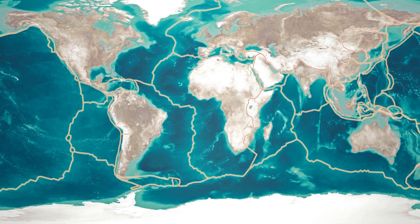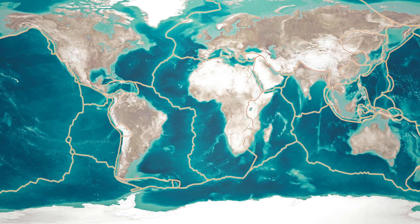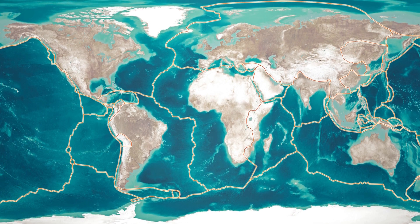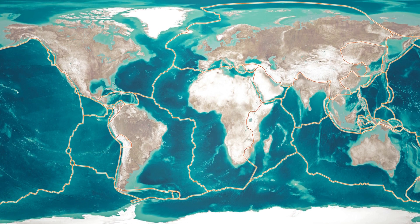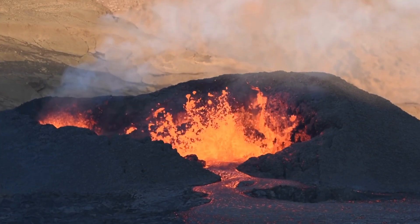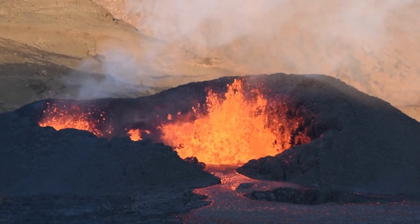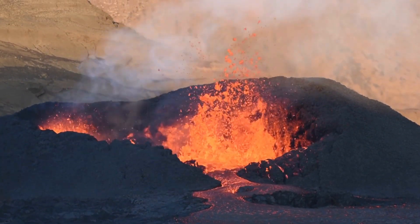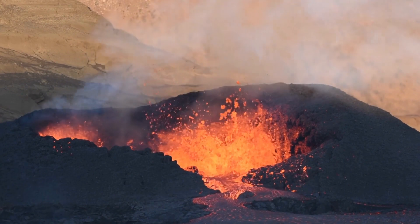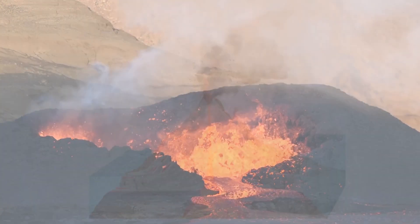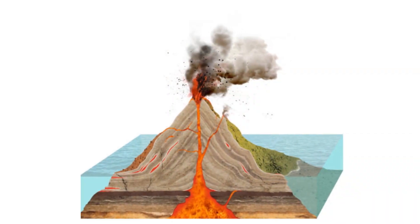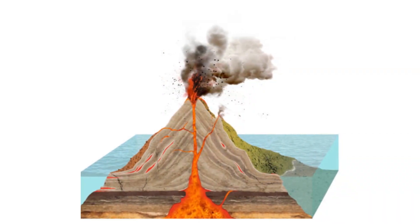Plate tectonics gives rise to several fascinating phenomena that shape our planet. Volcanoes are born at convergent and divergent plate boundaries. The movement of plates allows magma to rise to the surface, resulting in volcanic eruptions.